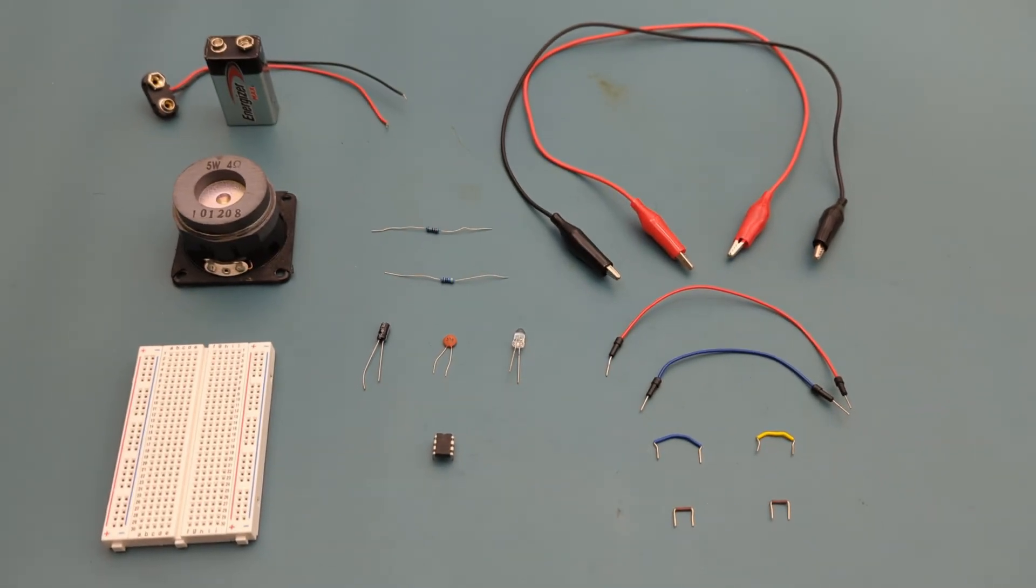Here are all the components you need to set up this circuit. Two alligator clips, six jumper wires, one 220,000 ohm resistor, one 470 ohm resistor, one 10 microfarad capacitor, one 0.1 microfarad ceramic capacitor.